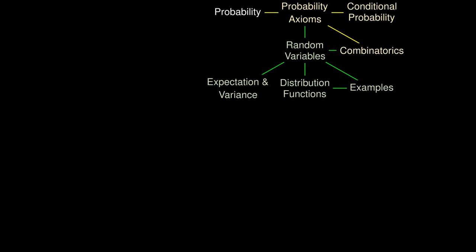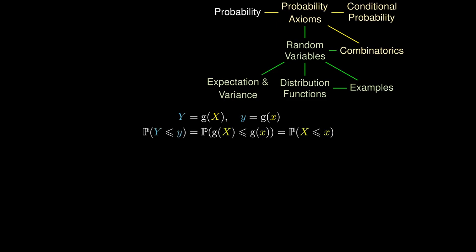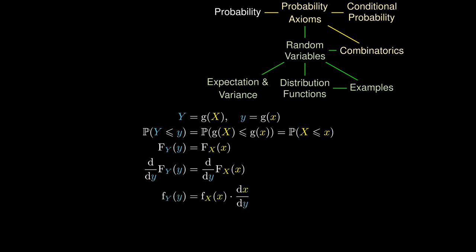Suppose the random variable Y is related to the random variable X. Then the CDF of Y is precisely the CDF of X composed appropriately. Differentiating with respect to Y on both sides, we can obtain the PDF of Y in terms of the PDF of X — we take the PDF of X divided by the magnitude of the derivative of G. This denominator is known as the Jacobian.